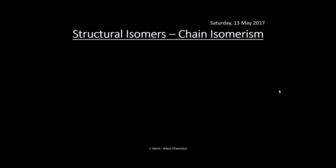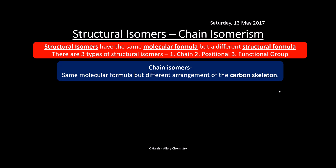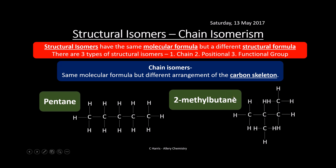Structural isomers have the same molecular formula but different structural formulas. There are three main types: chain, positional, and functional group. Chain isomers have the same molecular formula but a different arrangement of the carbon skeleton. For example, pentane and 2-methylbutane are chain isomers of each other — the same number of carbons and hydrogens, but 2-methylbutane has a methyl group branching off the second carbon.